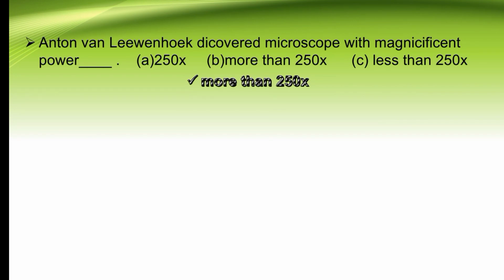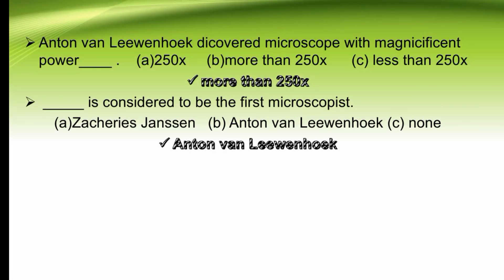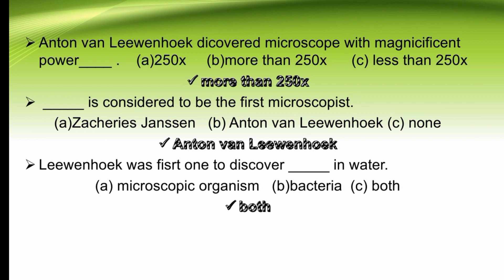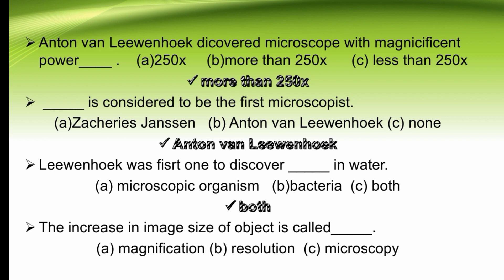Antonie van Leeuwenhoek discovered a microscope with magnification of more than 250x. The right option is more than 250x. Dash is considered to be the first microscopist — Zacharias Janssen, Antonie van Leeuwenhoek, or both. The right option is both. He was the first to discover bacteria and other microscopic organisms in water through a microscope. The increase in image size of an object is called dash — magnification, resolution, or microscopy. The right option is A, magnification.